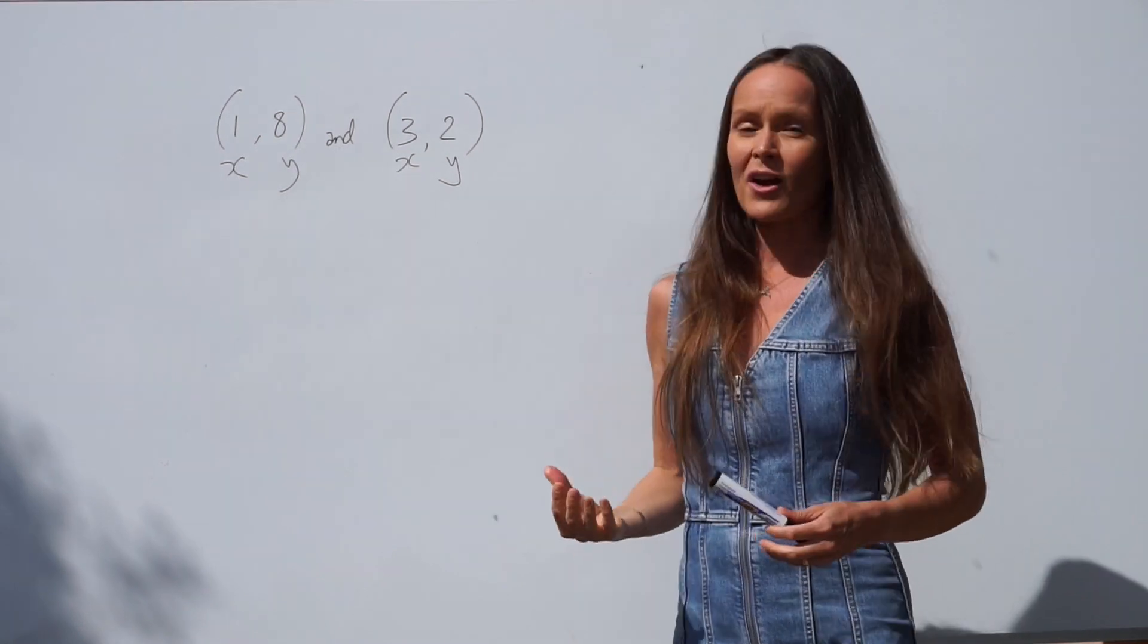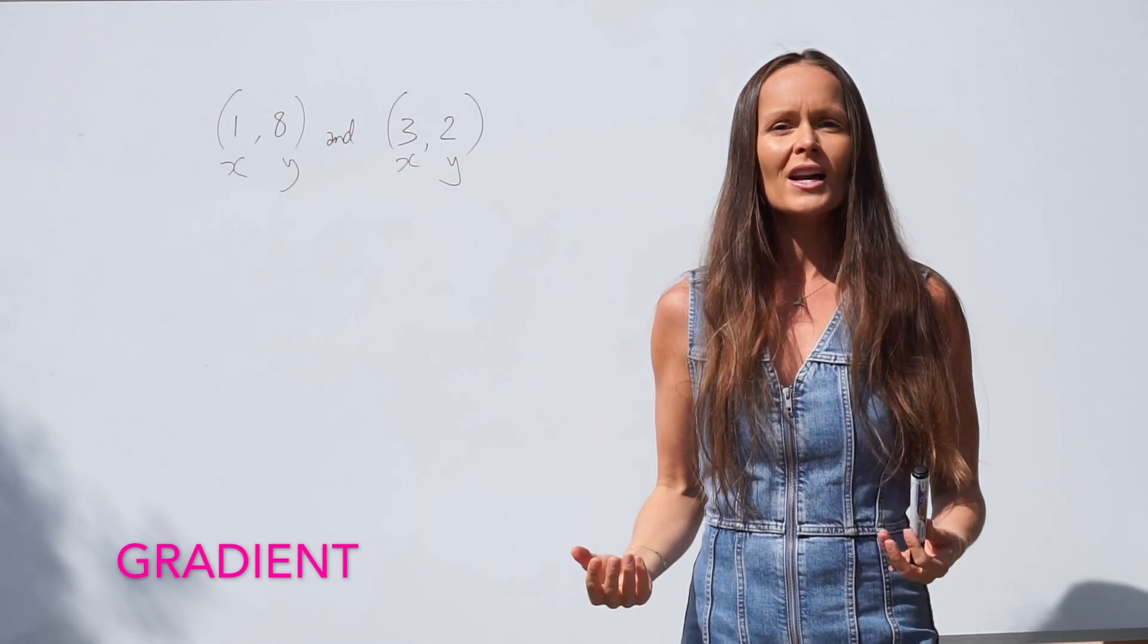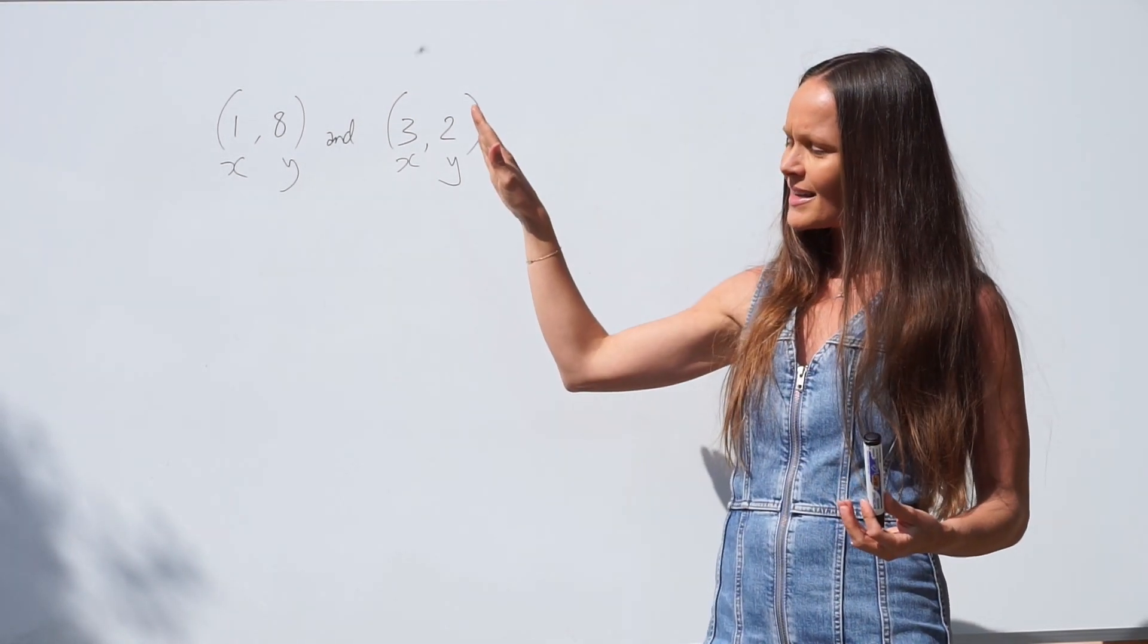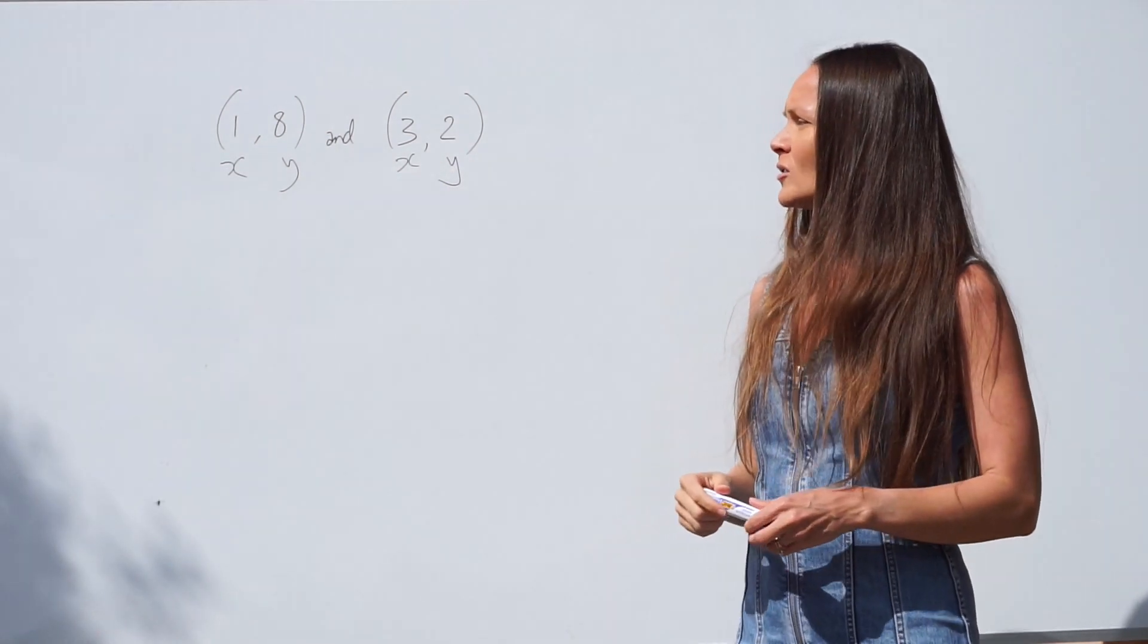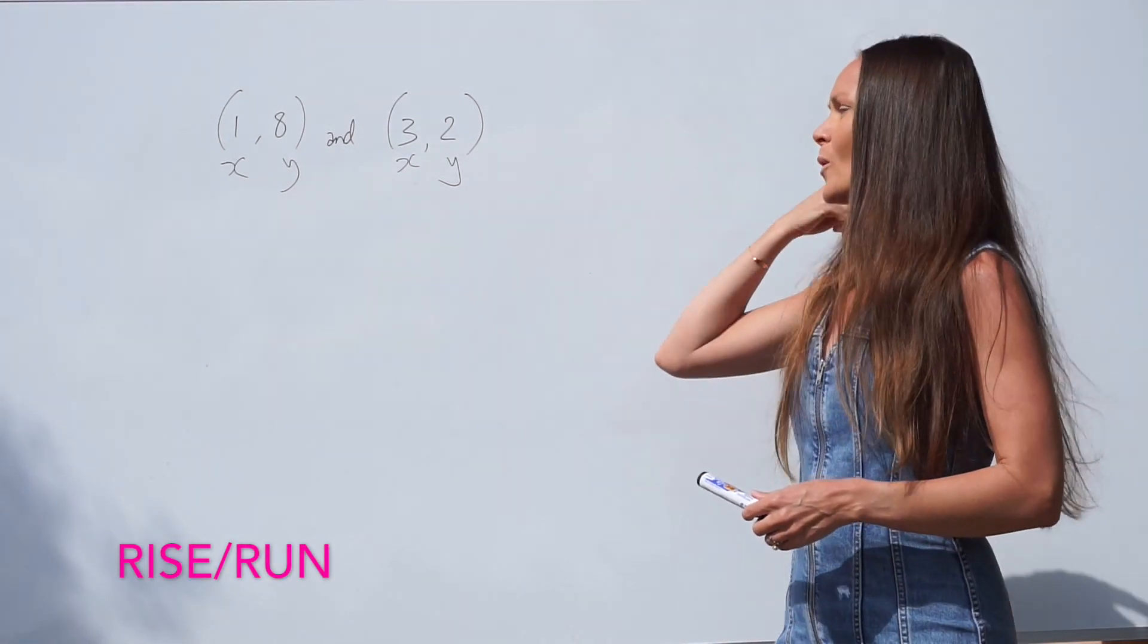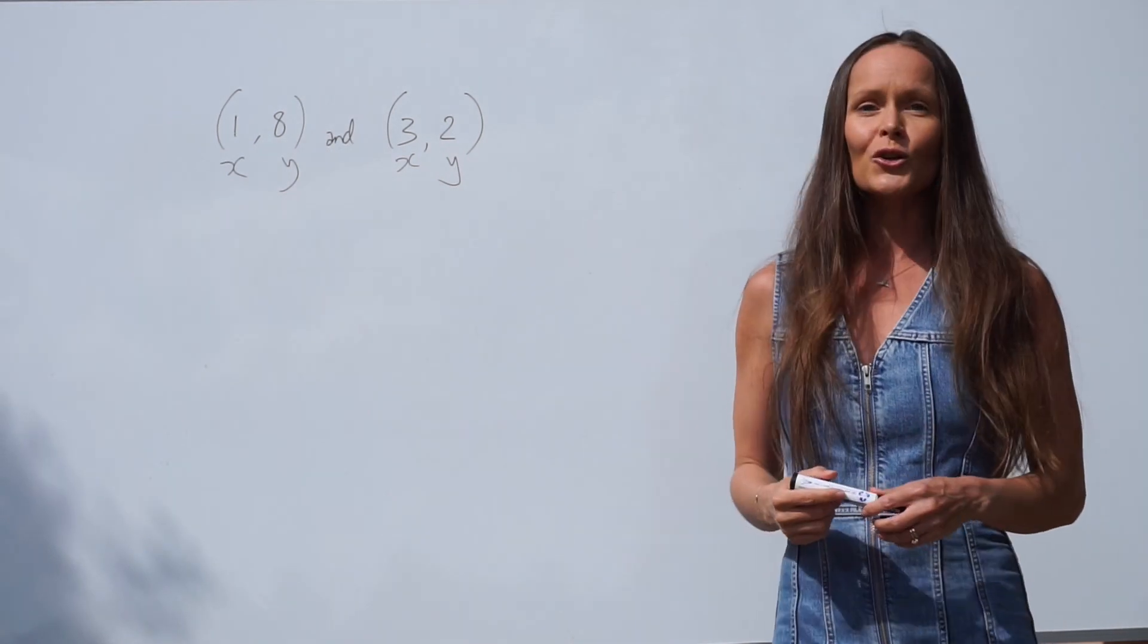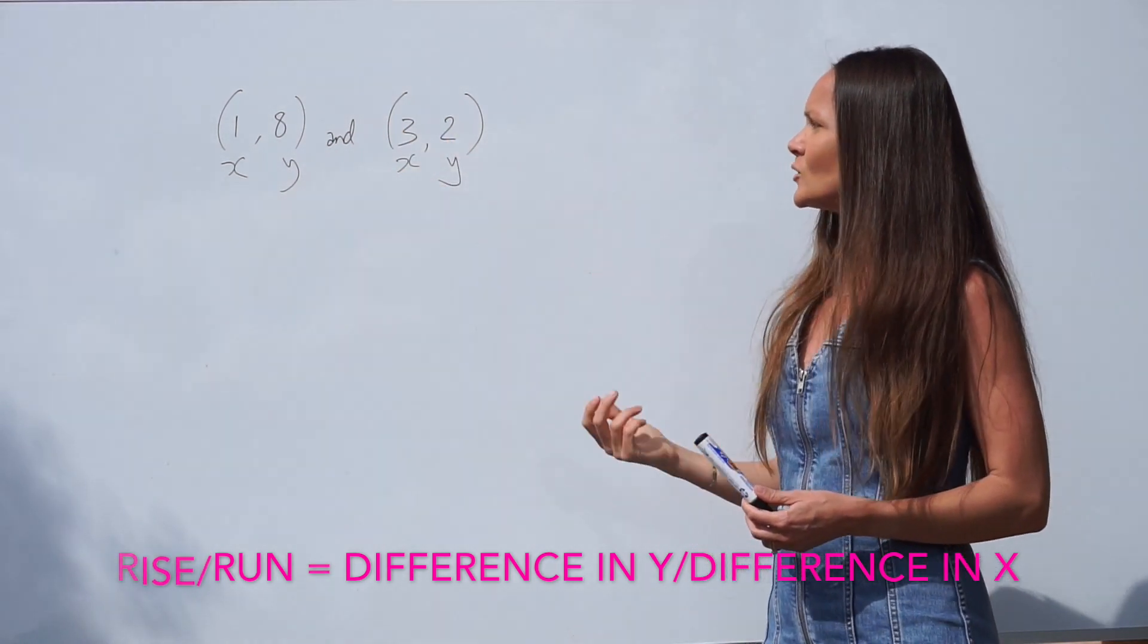What you need to do first is find out the gradient of the line. The gradient just means how steep the line is. A big gradient would be a steep line and a small gradient would be a much flatter line. I'm going to use a method called rise over run. To work out the rise over run and the gradient, you need to subtract the y values. The y values are here, 8 and 2.